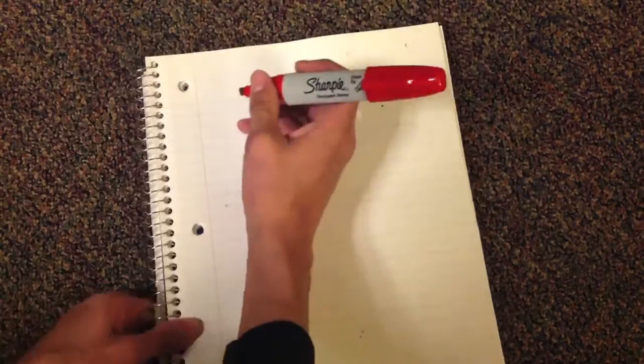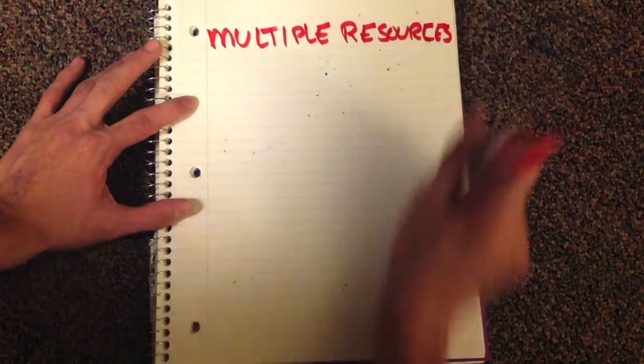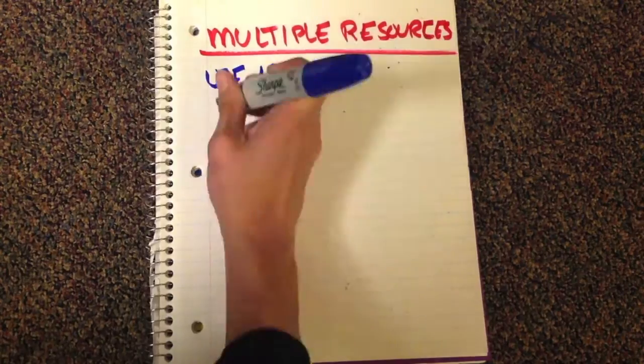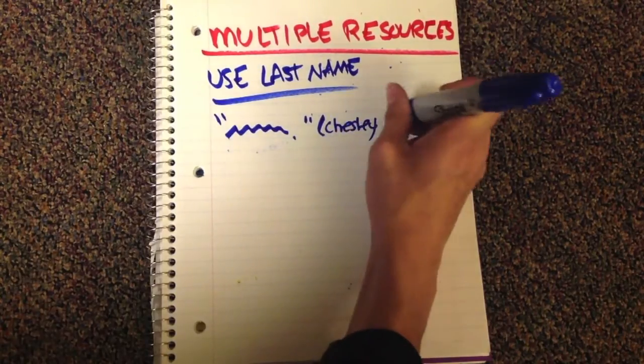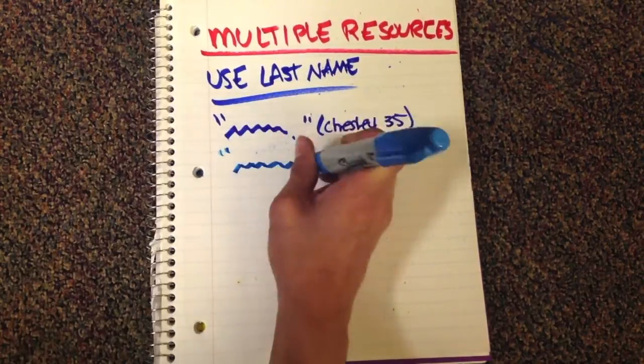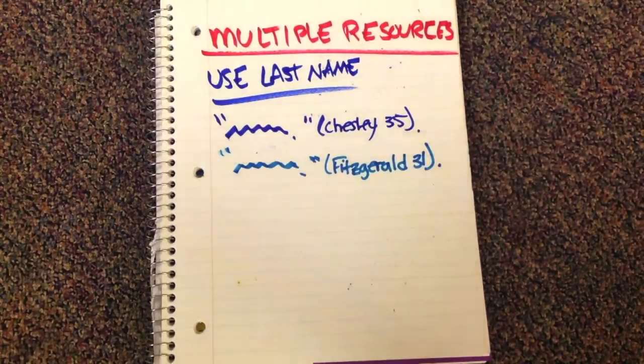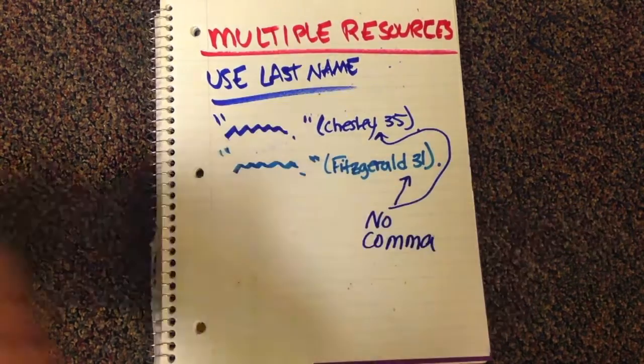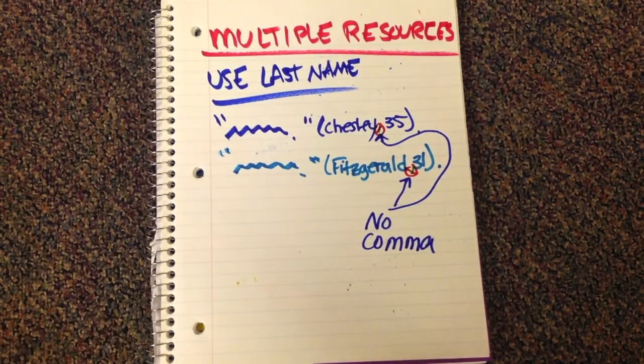Now, let's say you're writing a research paper and using multiple resources. So let's say I have Fitzgerald and Chesley writing, I have two different authors. Now, if I'm going to use multiple authors, that's when you do put the author's last name. So you are going to, at the end of the quote, you're going to put parentheses, Chesley 35, period. Or, and then whenever you cite Fitzgerald, you're going to put Fitzgerald 31, close parenthesis, period. So you do use the author's last name when you're using multiple resources. However, there is no comma that goes between the author's last name and the page number. It's just name, number, close parenthetical, okay?